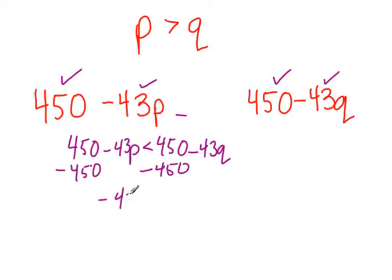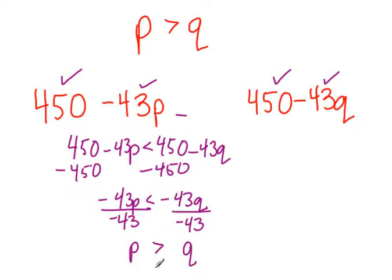You have negative 43P is less than negative 43Q. So I'm going to divide by negative 43, and divide by negative 43, and I get P left over here, and I get Q left over here, and because I divided by negative, I flip-flopped the sign. So that is a fact. That is the fact you started with. Therefore, this must be true.